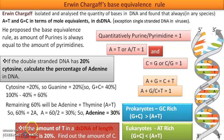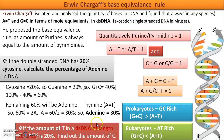A more advanced question: given the amount of T in a double-stranded DNA of length 2000 base pairs. First, convert: 2000 base pairs = 4000 bases (since one base pair is 2 nucleotides). Then find the percentage of C using Chargaff's rules, and calculate the amount of C as (percentage/100) × 4000. For example, if C is 40%, then the amount of C = 40/100 × 4000.